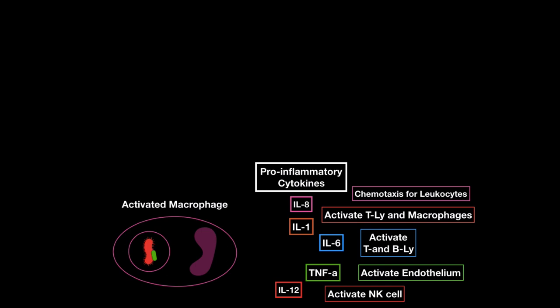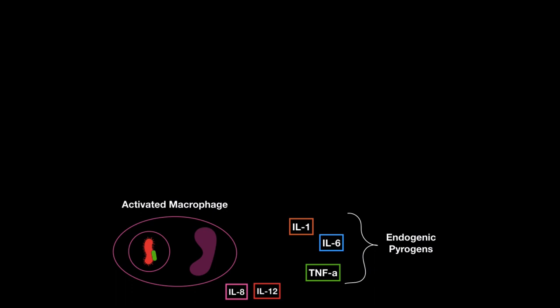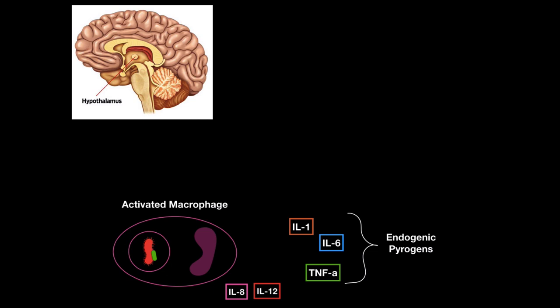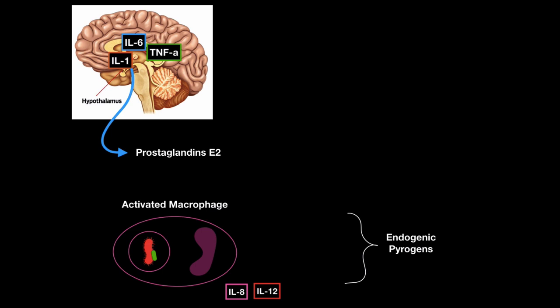This is a local response, but interleukin-1, interleukin-6, and tumor necrosis factor alpha also have a systemic role — they act as endogenic pyrogens, causing fever. The hypothalamus works as a thermostat, sensing and regulating body temperature. These three can travel to the hypothalamus and cause a release of prostaglandin E2, which initiates fever. Fever makes a harsher environment for certain microorganisms to survive — it can denature their proteins, slow down their replication, and also speed up your metabolism for a quicker healing process.